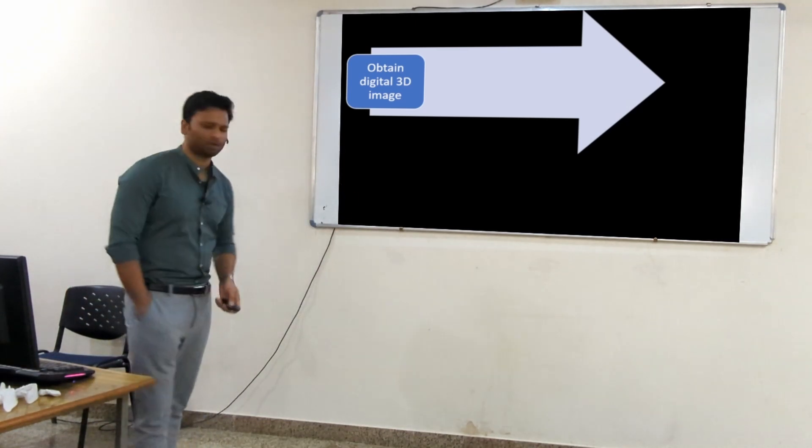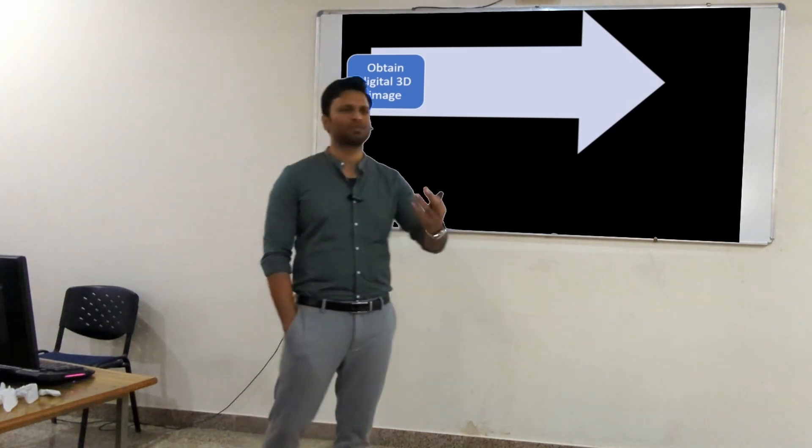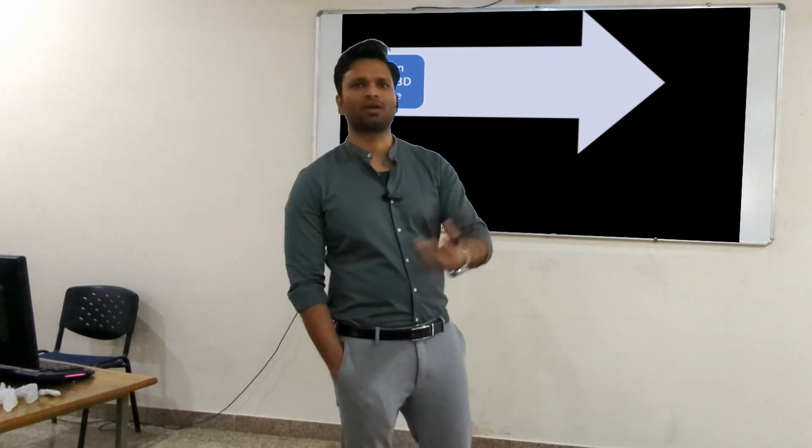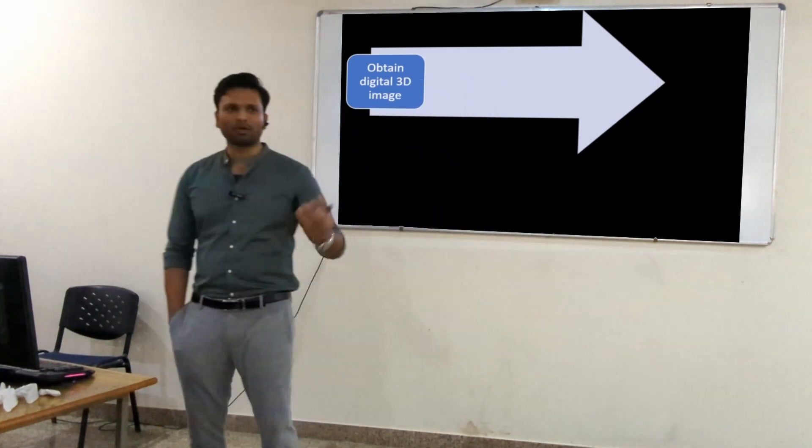Obtaining the 3D image can be done in two ways. One is from the patient's CT scan DICOM files - we can generate the 3D model using the process called 3D segmentation, which we are going to do today.